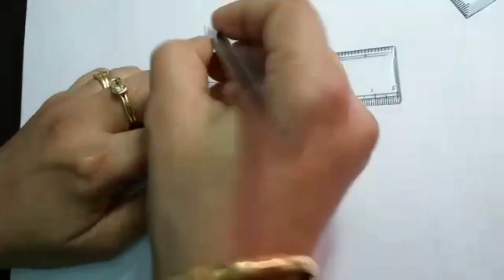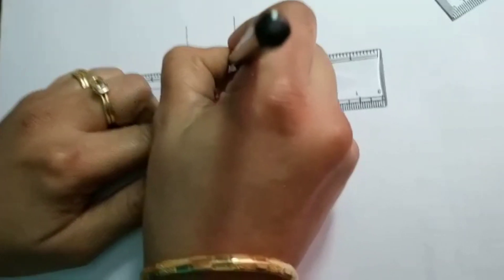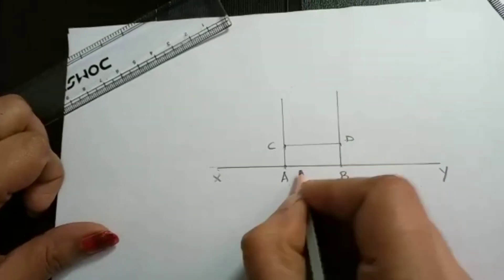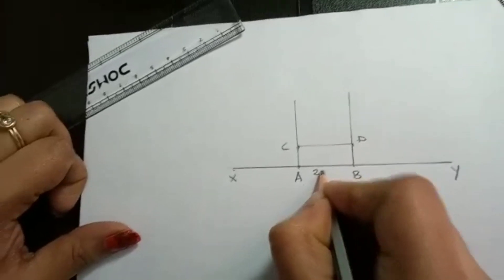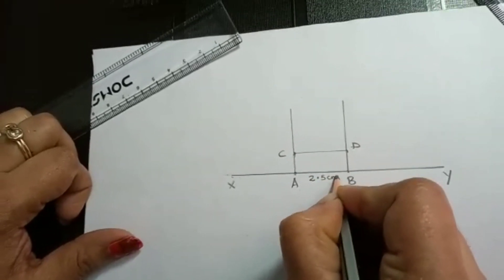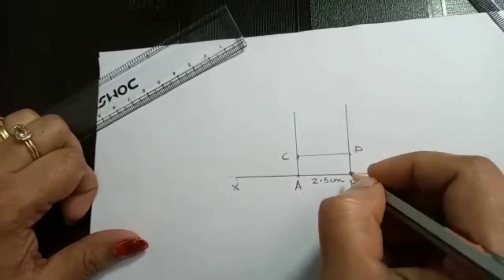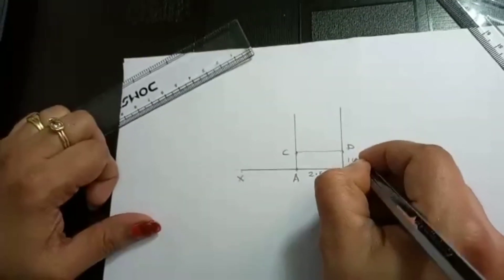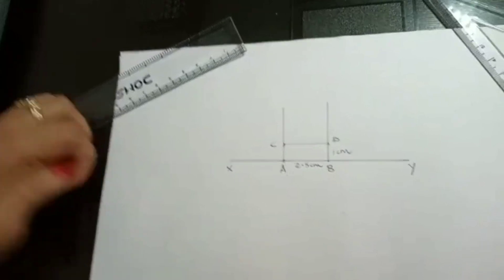That is the final step. So now what you got. You got a rectangle with AB 2.5 cm and this side it is 1 cm. Thank you.